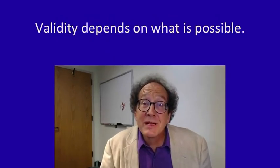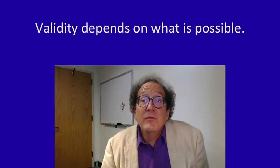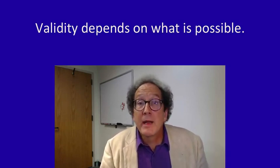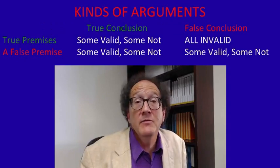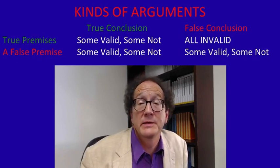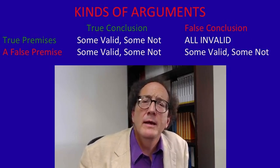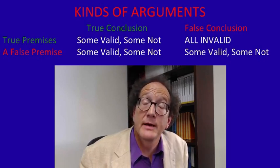We haven't been through all of the possibilities, but we've seen that you can have invalid arguments with true premises and true conclusions, and valid arguments with false premises and true conclusions. We have a little table that shows us the other possibilities. Rather than going through all of those myself, it would be better if you did a few exercises — that'll make sure you understand this notion of validity before we go on and try to show how validity is related to soundness.